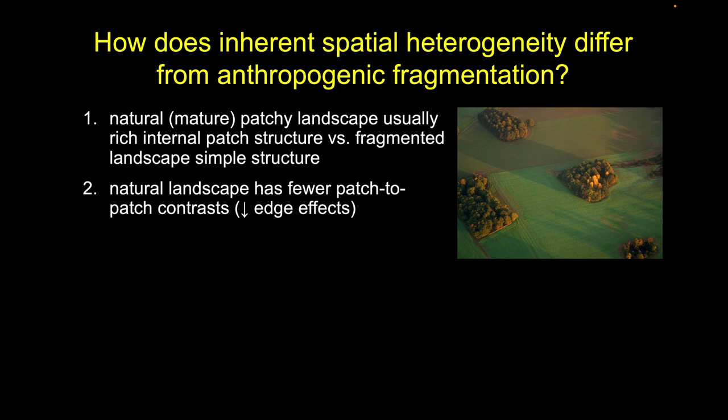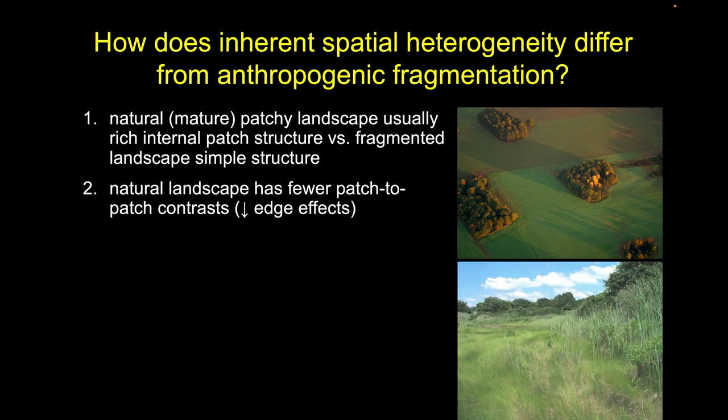As we go from natural patches to human-dominated landscapes, we tend to have fewer strong edge effects in natural systems but very strong edge effects in human-dominated ones. In a more natural setting, we tend to see a gradual transition from tall vegetation down to progressively lower vegetation.